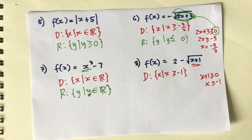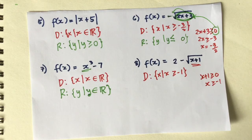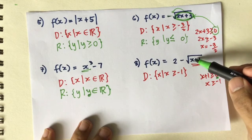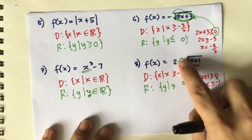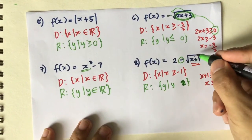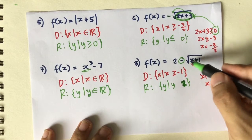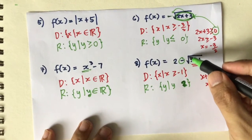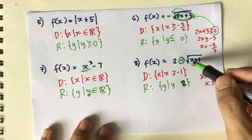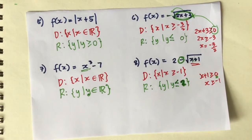The values that make the expression under the square root non-negative are x ≥ -1, so the domain is x such that x ≥ -1. For the range, the minimum value inside the square root is 0, giving a minimum square root output of 0. With a negative outside and a constant of 2, 2 minus 0 equals 2, making 2 the maximum value. As x increases, the output becomes more negative, so the range is y ≤ 2.